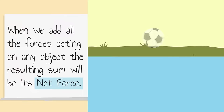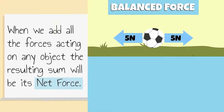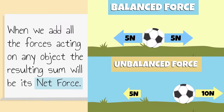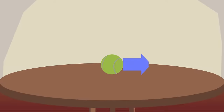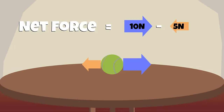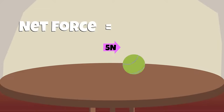If the net force is zero, then the forces are balanced. If it is not equal to zero, then they are unbalanced. When two forces act in opposite directions on an object, the net force is calculated by subtracting the forces. The object will move in the direction of the stronger force.